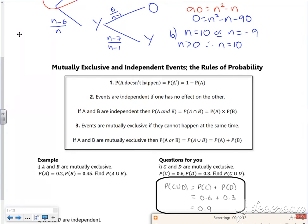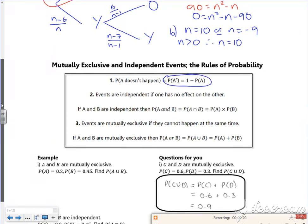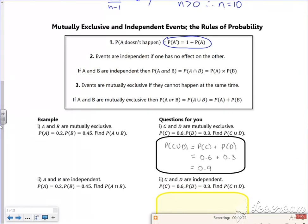So if A doesn't happen, it's 1 minus A happening. So we should be happy with that result, that the complement is 1 minus it actually happening.